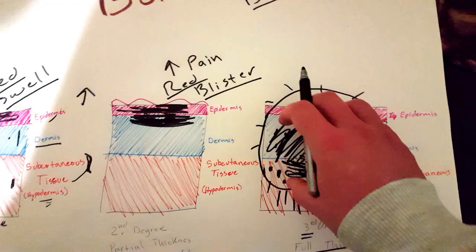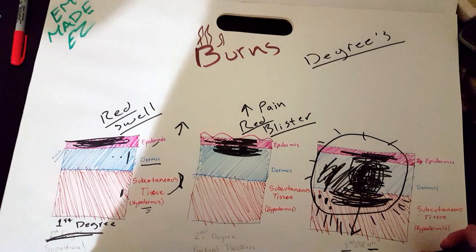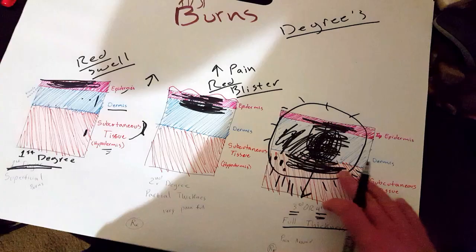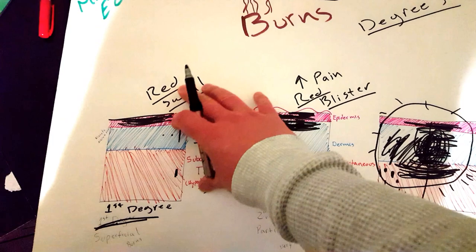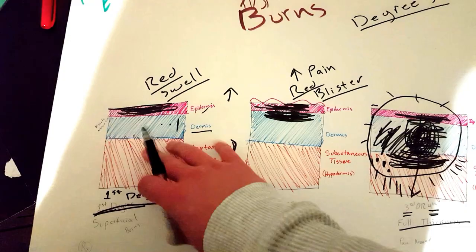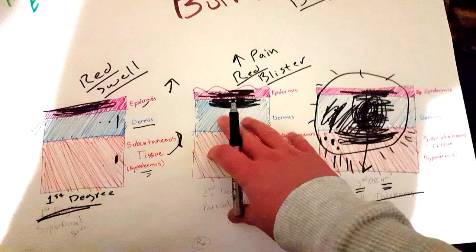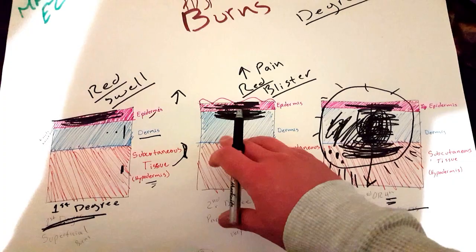I think that's really all I wanted to cover today, just the different degrees. I guess I might as well hit on how to treat. For these patients, just take them out of the environment and keep them cool. Maybe some lotion down the road. For patients with second-degree or partial thickness burns, make sure you do not pop the blisters. Just put a bandage on there and seal it up.